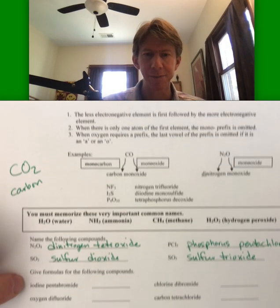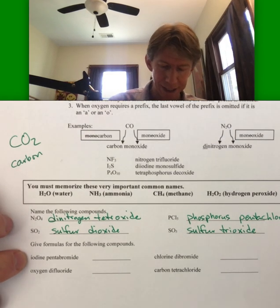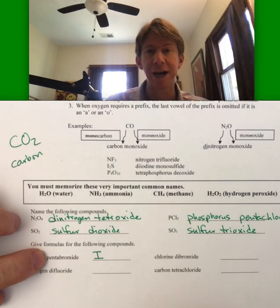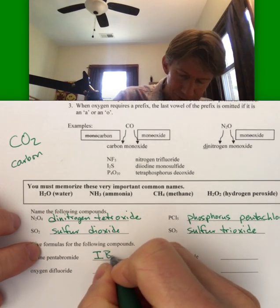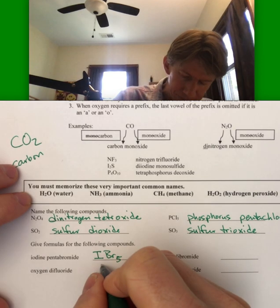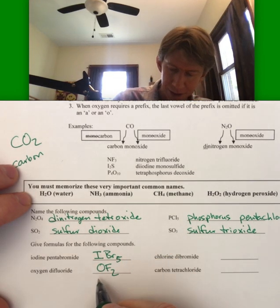Now working backwards, we've got iodine. No prefix, so that's just going to be a one. Penta is five. And bromine, bromide. IBr5. Oxygen difluoride. Again, none of the first one.